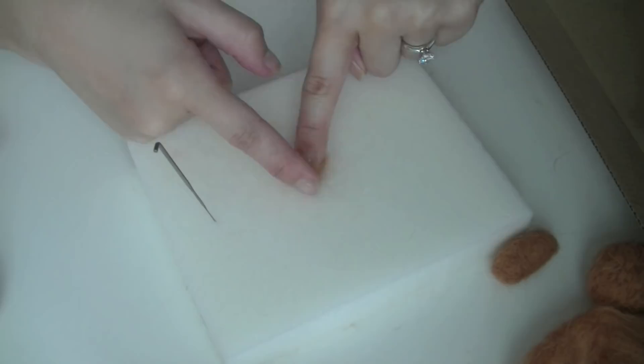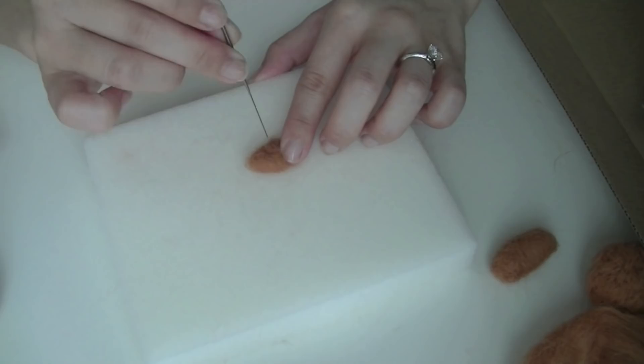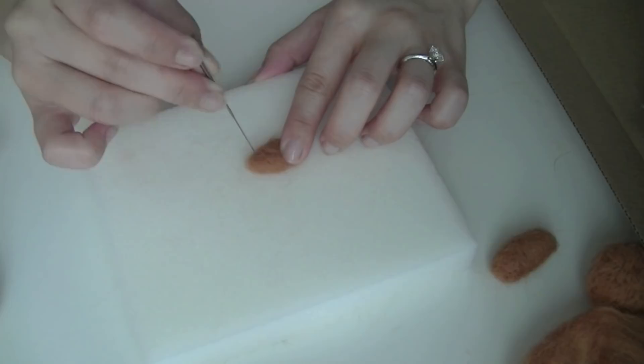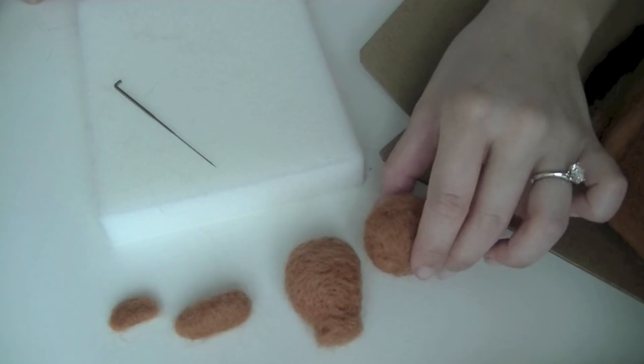So again, being very careful, I'm going to start stabbing away. The really awesome thing about needle felting is you don't need to sew. I hate sewing. It's so hard and it takes forever. So I have the head, the body, upper snout and lower snout. Now it's time to make the hind legs.